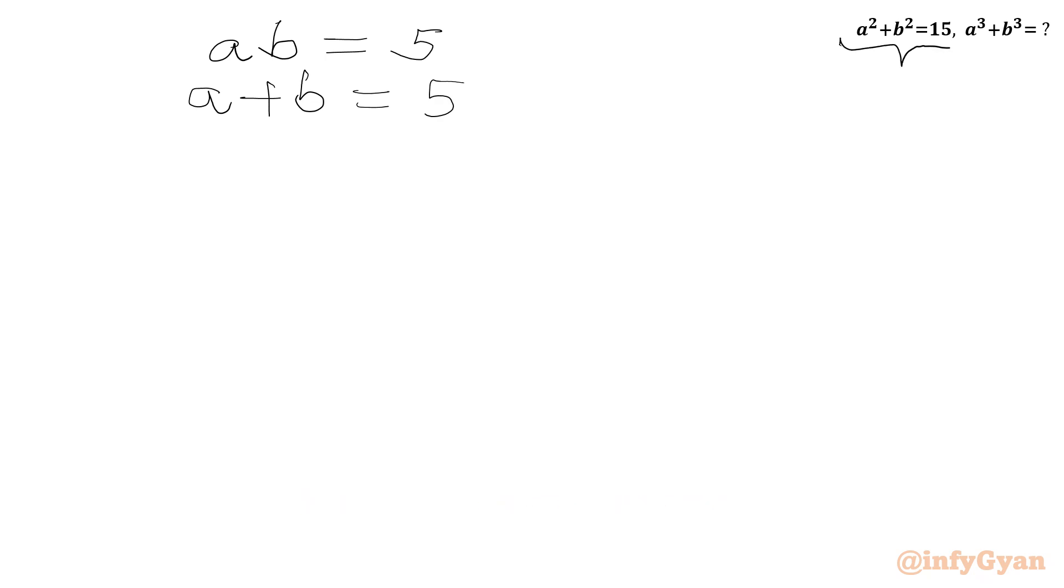Then we have a² plus b² equals 15, and we have to find a³ plus b³. So let me write the a³ plus b³ formula. This equals (a plus b)(a² plus b² minus ab).